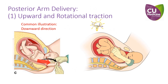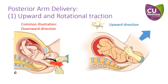We emphasize several important points which will improve our technique in posterior arm delivery. Firstly, instead of downward traction, we recommend upward traction to achieve rotation of both shoulders. This rotation disimpacts the anterior shoulder from the pubic symphysis and is a major mechanism to resolve a shoulder dystocia.